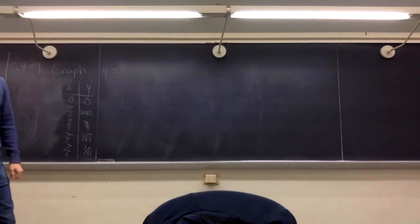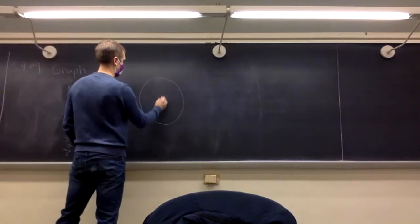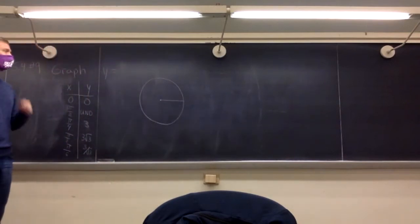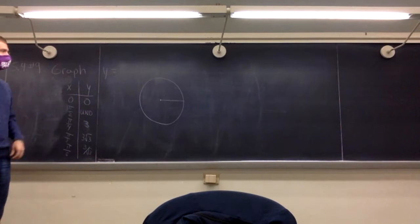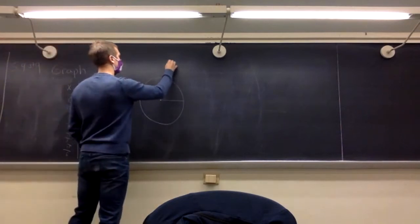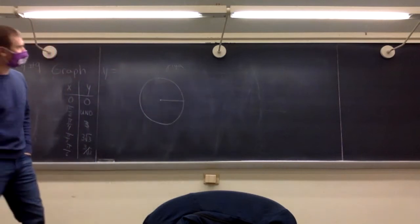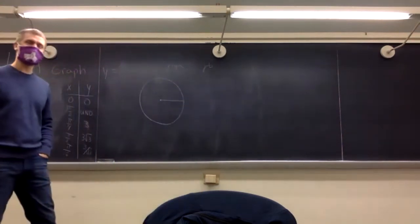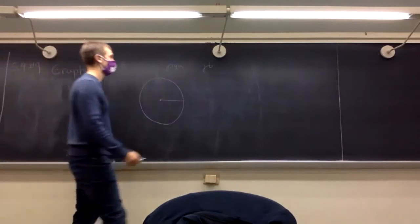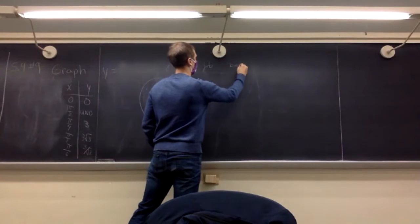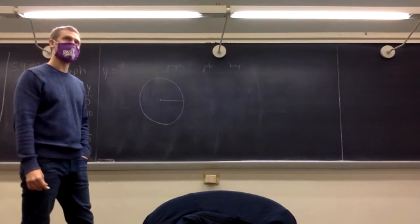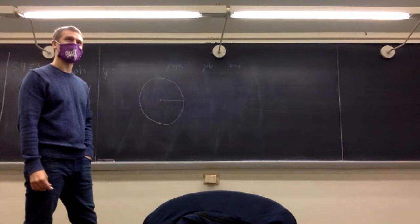I did a little research on where these names come from. It turns out in the 400s, there were some Arabians studying these things. They were using the word 'jiba,' and then it was translated at some point to a different word, 'jibba,' which means roughly a bay or an inlet. And that in Latin was translated to 'sinus' — so there you go, that's where 'sine' comes from.